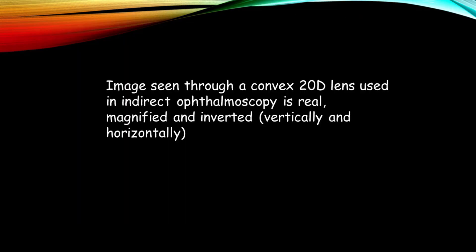The image seen through a convex 20 diopter lens used in indirect ophthalmoscopy is real, magnified, and inverted vertically and horizontally. The location which I will be describing will be on the basis of the quadrant which I am examining.